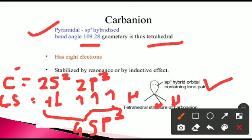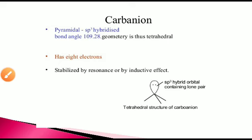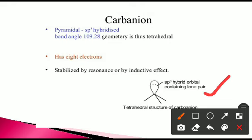The shape is pyramidal because of the lone pair of electrons, and the bond angle is 109.28°. It has eight electrons: three hydrogen atoms each contribute one electron, combining with three unpaired electrons of carbon to form six bond pair electrons, plus one lone pair — six plus two equals eight electrons. This can be stabilized by resonance and the inductive effect.